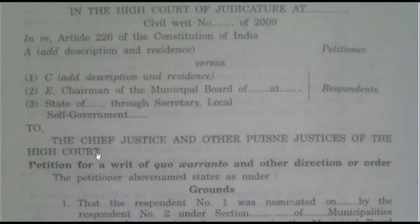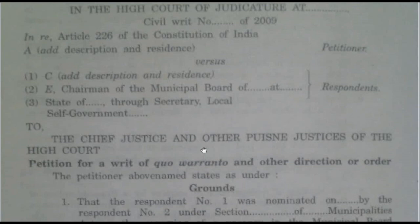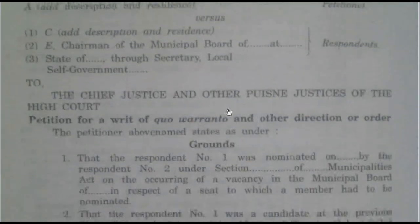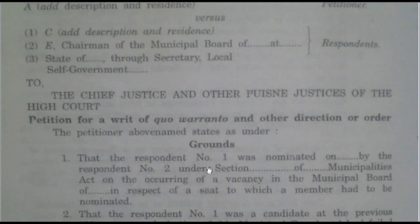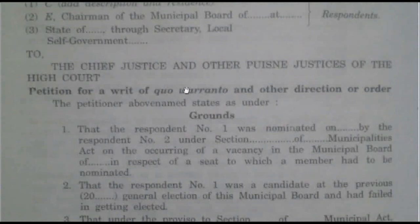On the right-hand side, you have to mention all respondents. Then you have to mention to whom the writ has been issued for the relief — that is the Chief Justice — and then the subject: that we are requesting a Writ of Quo Warranto. After that, you have to mention on which grounds the petitioner is asking for the writ.